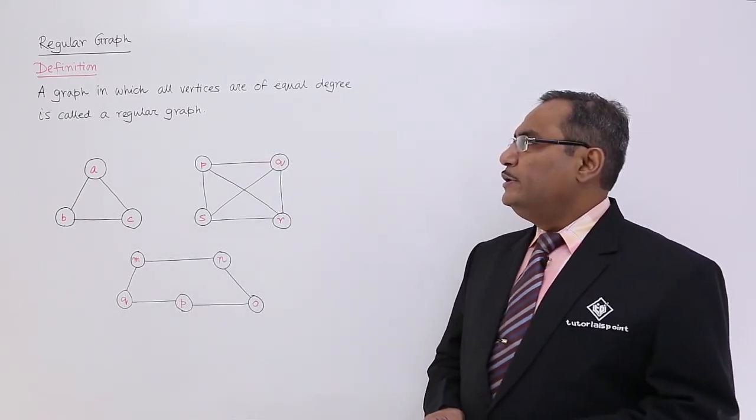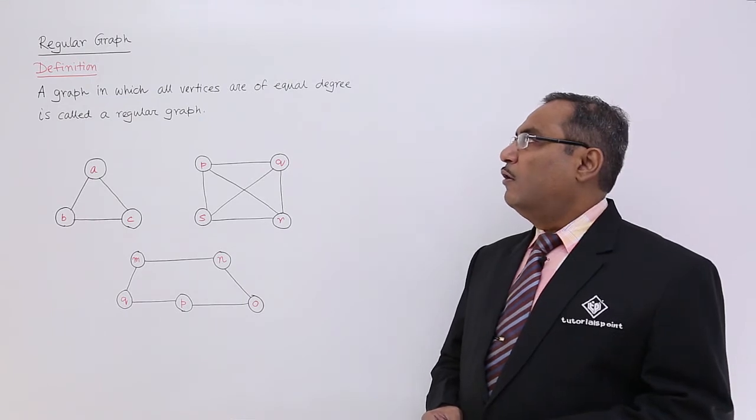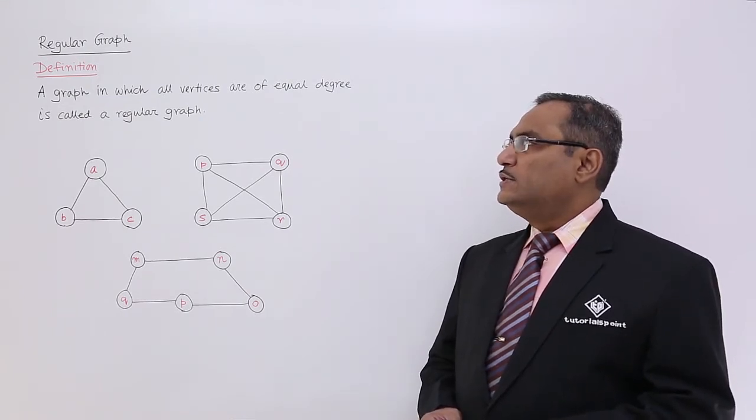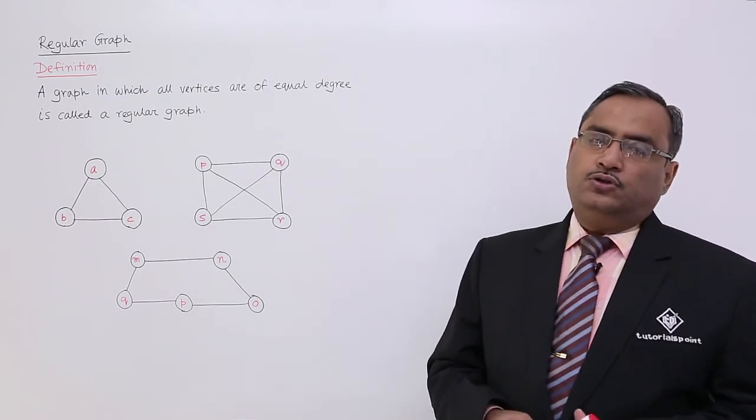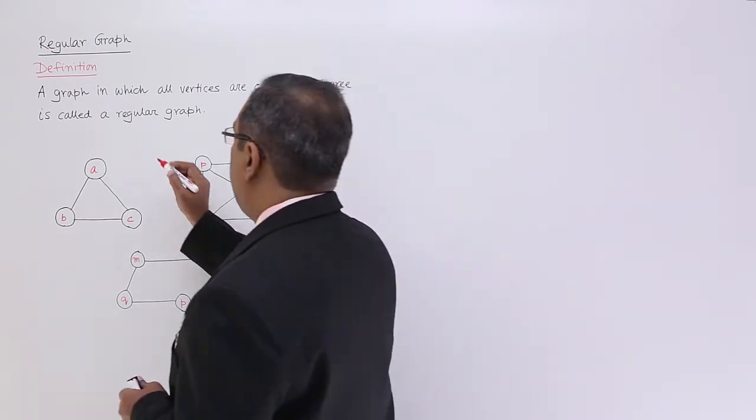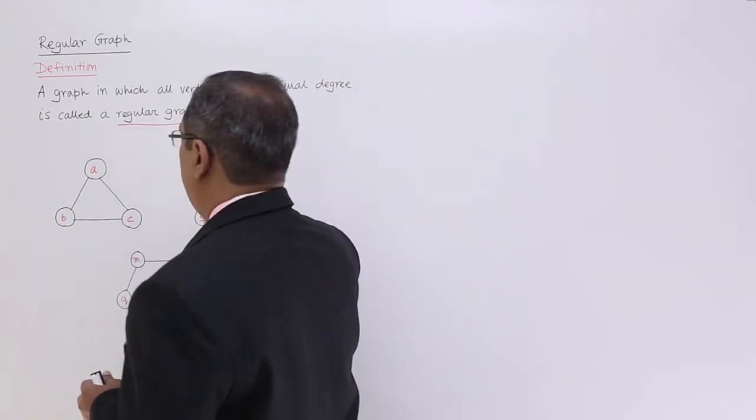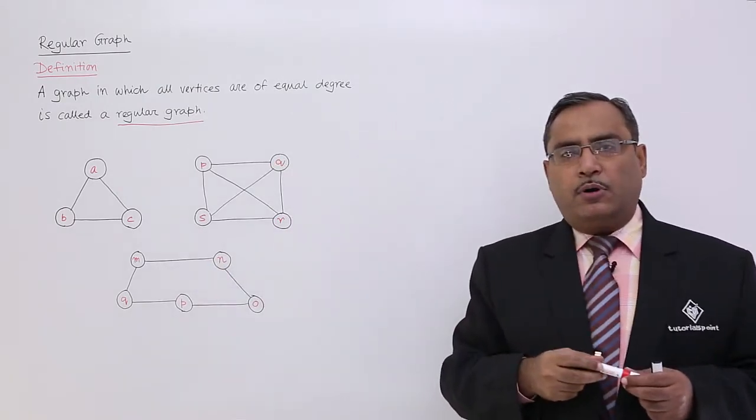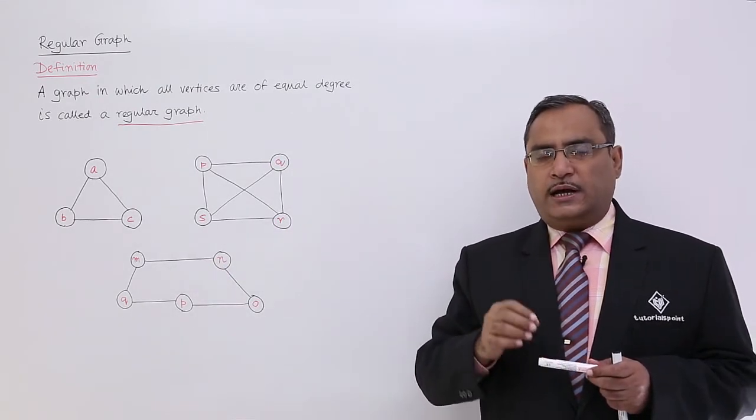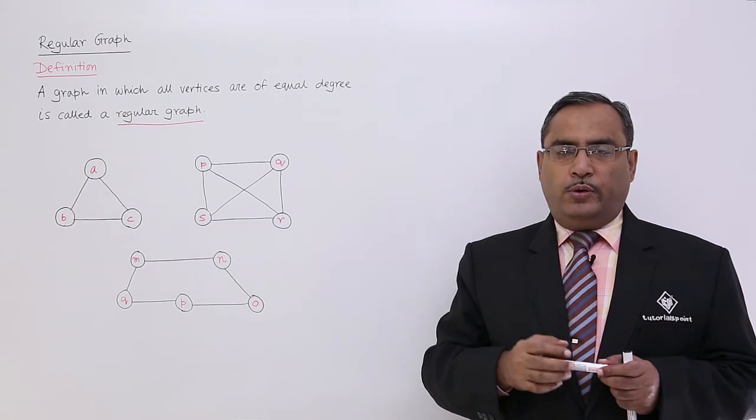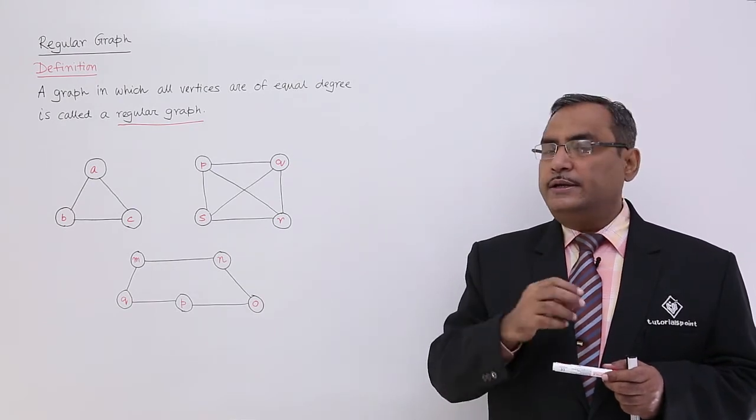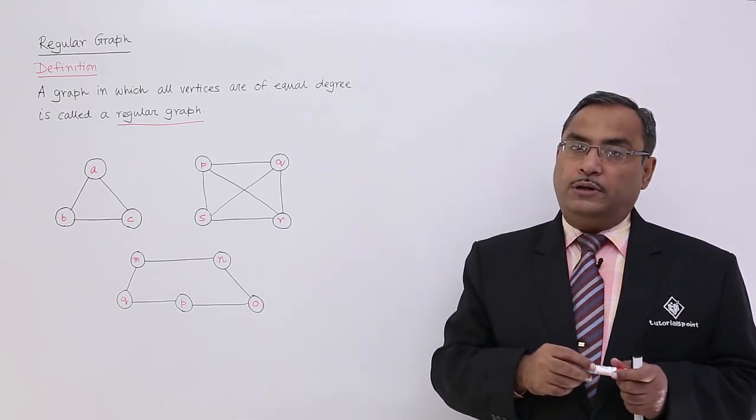A graph in which all vertices are of equal degree is called a regular graph. When all the vertices of a graph have equal number of degrees, we know that degree means number of edges or branches connected with a certain vertex. That count will decide the degree for the particular vertex.